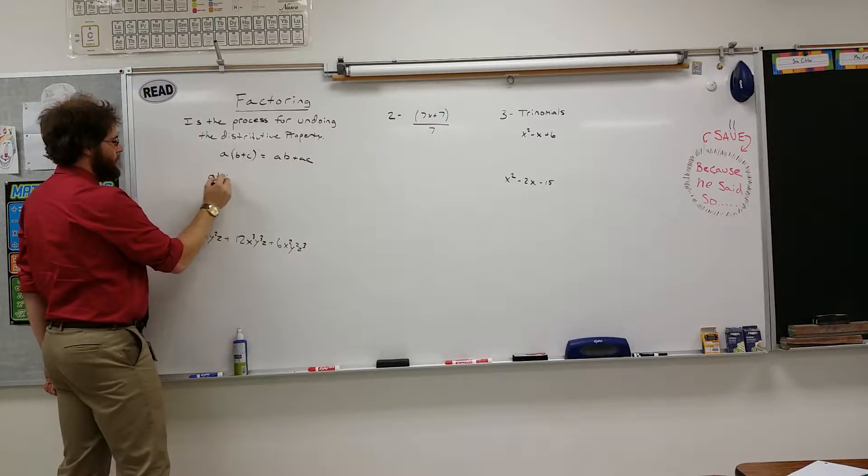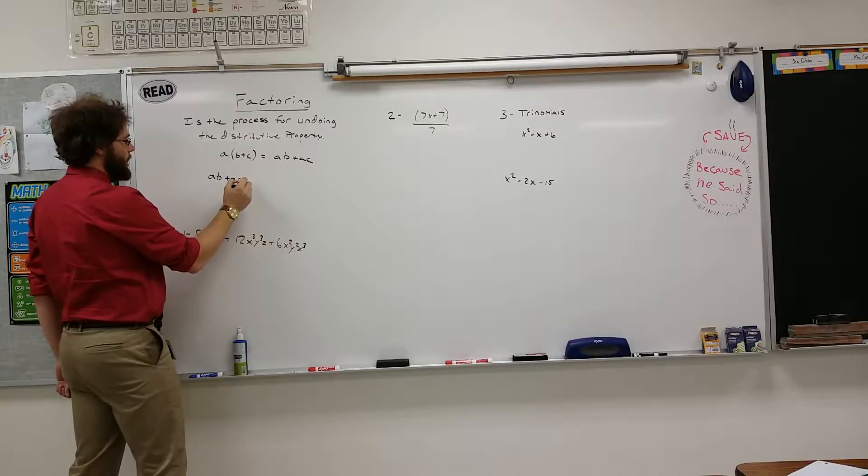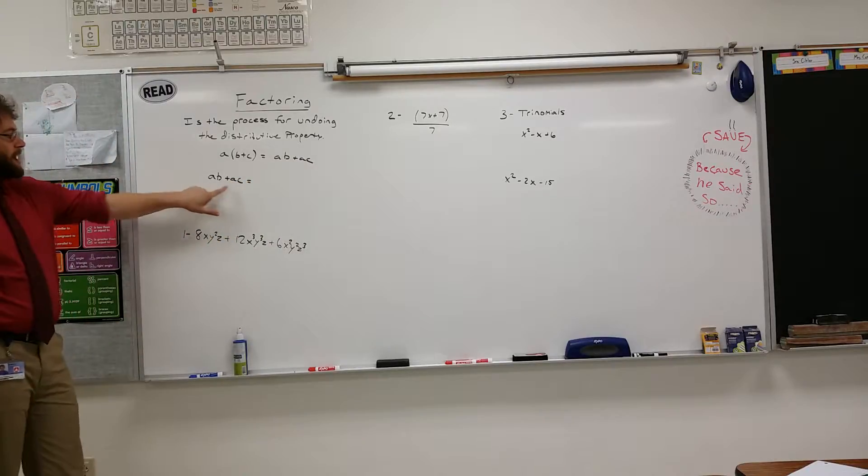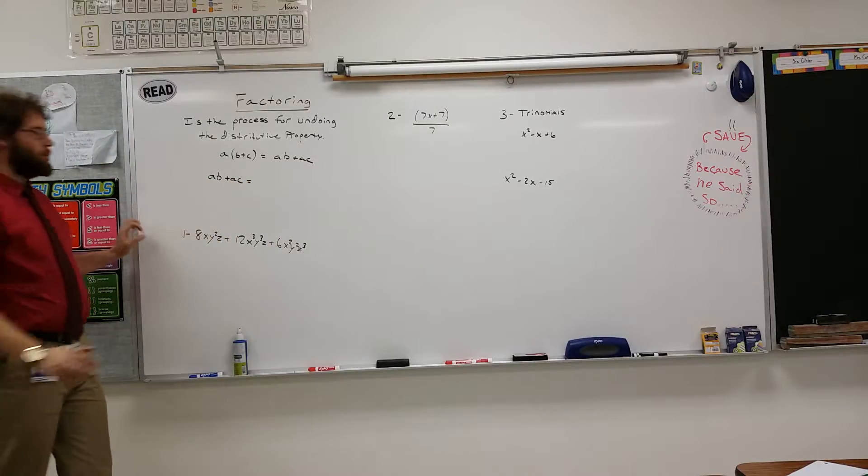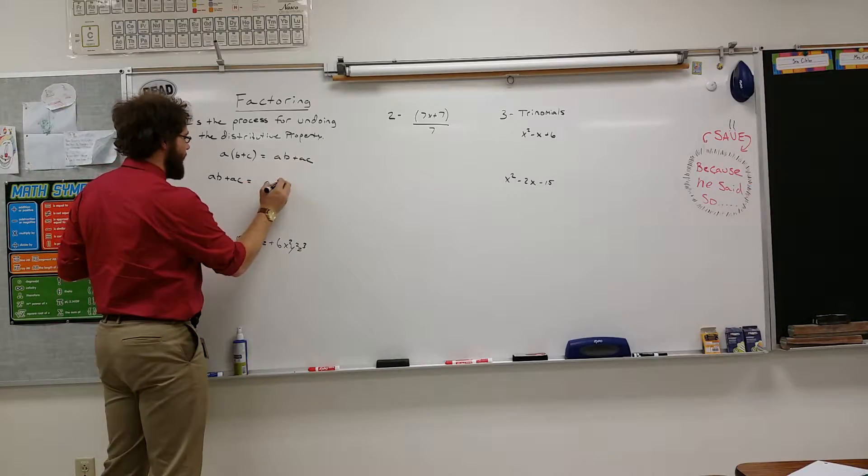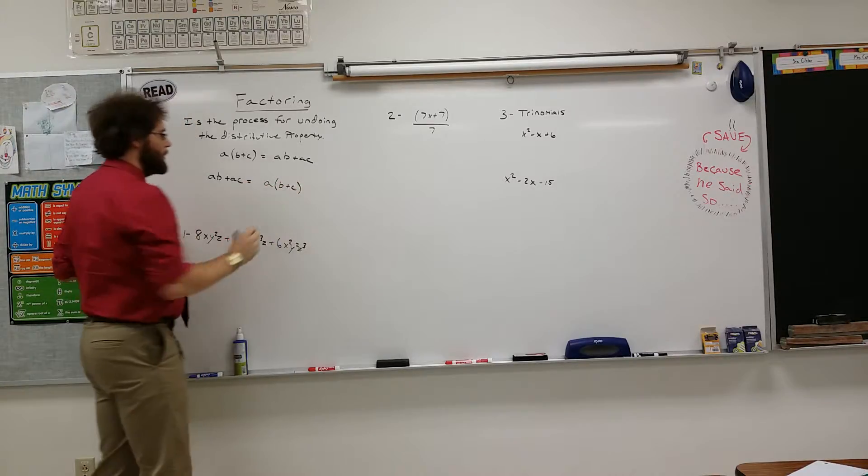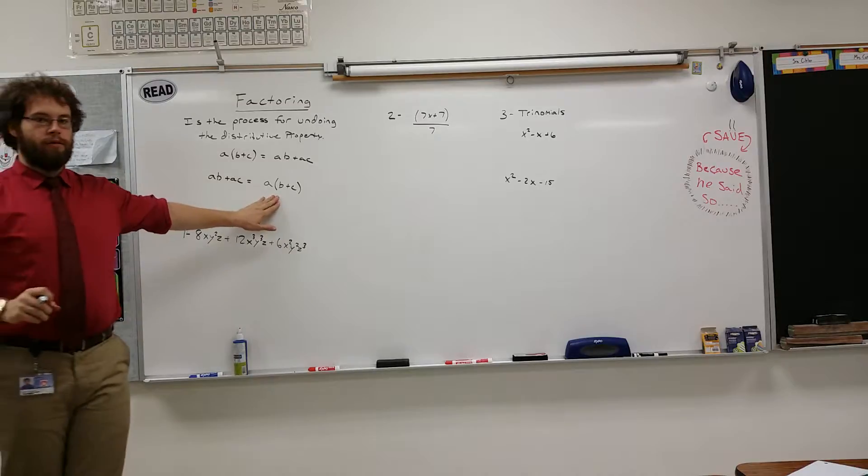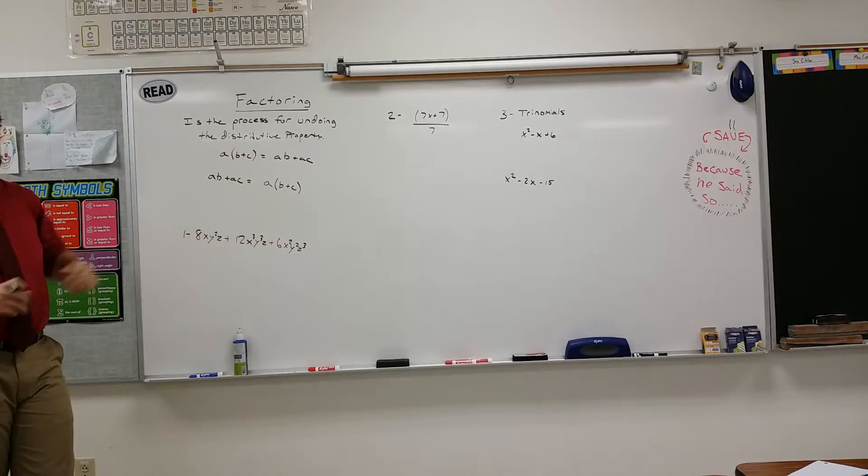Well now we're taking AB plus AC. We see that there's a common factor, A, in both of these terms, and so we're taking A out and bringing it back to what we originally started with, A times B plus C.